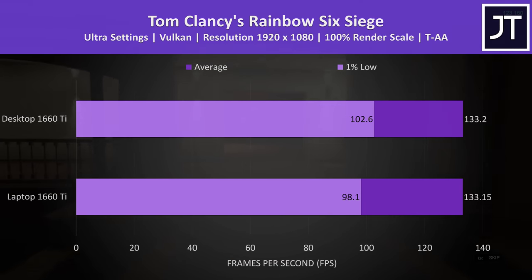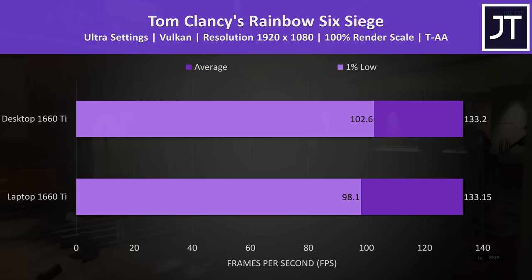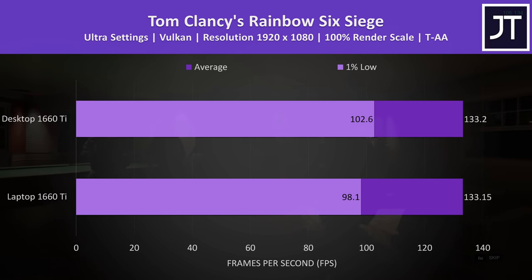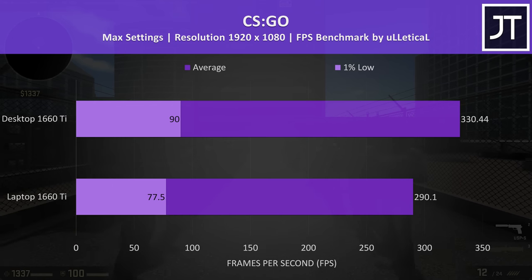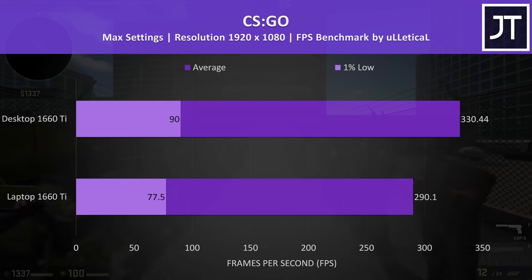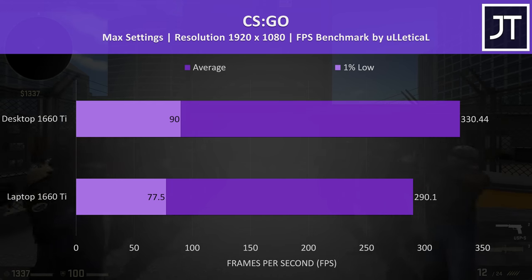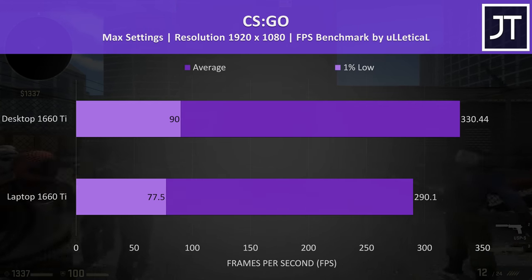Rainbow Six Siege was tested using the game's benchmark tool, and there was almost 0 difference between the two in average FPS using Vulkan — but this was the only game out of 16 tested to see basically no change. CS:GO was tested with the Ulletical FPS benchmark, and there was a below-average FPS difference here, with a 14% increase to average FPS with the desktop graphics. Generally in this game the CPU matters more than the GPU.